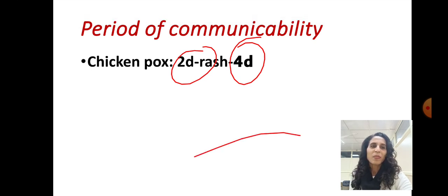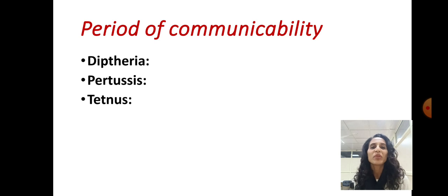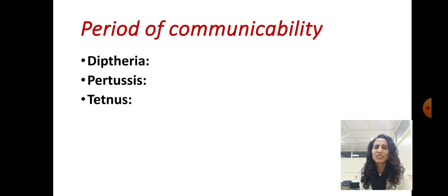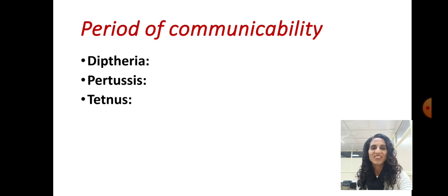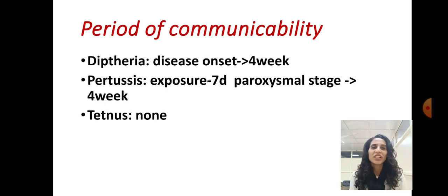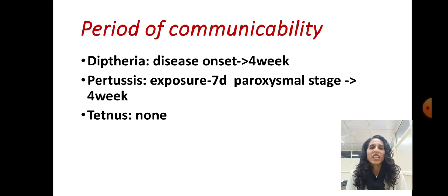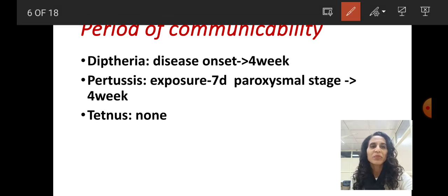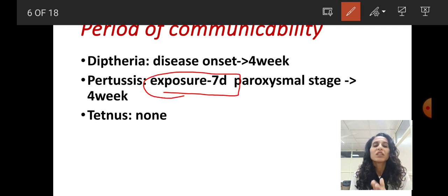What is the period of communicability for DPT — that is diphtheria, pertussis, and tetanus? Write in the comment section below. For diphtheria, the period of communicability is four weeks after disease onset — the case can transmit diphtheria till four weeks after the disease onset. For pertussis, the period of communicability starts seven days after exposure.